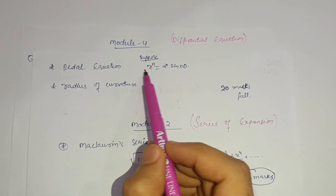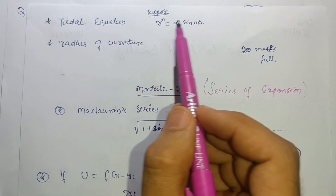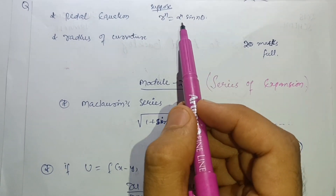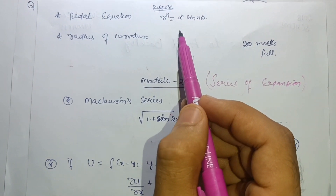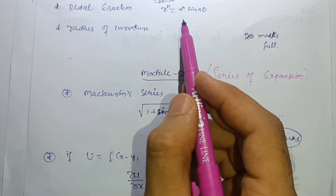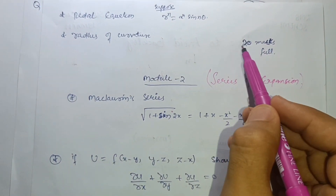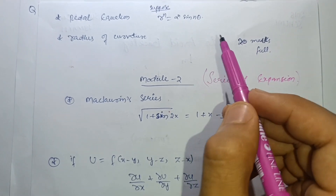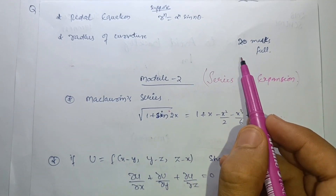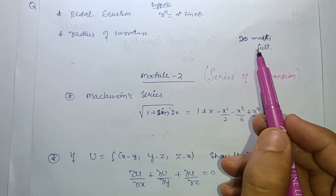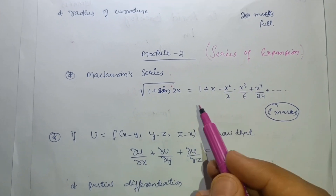Another topic in Module 1 is the pedal equation — for example, r^n = a^n·sin(nθ). Also cover the radius of curvature. You can carry 20 marks in this module as well. So between Module 5 and Module 1, 40 marks are already in your pocket. After securing these two modules, we can look at the other modules and decide how many questions to attempt.